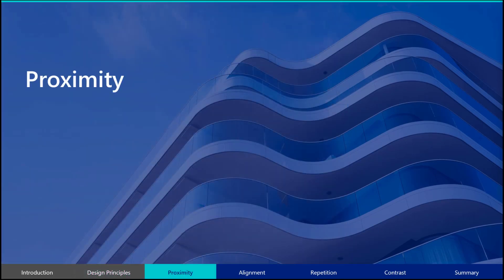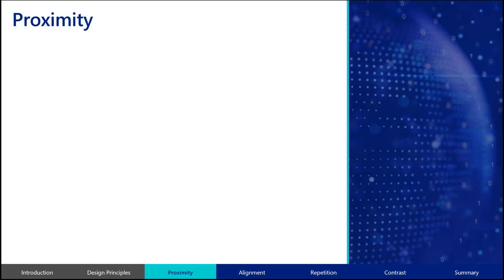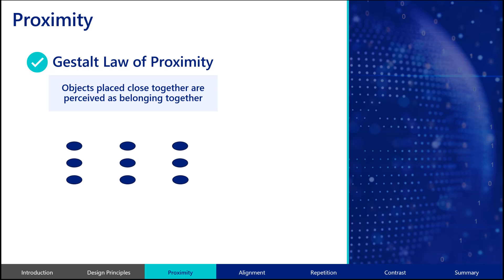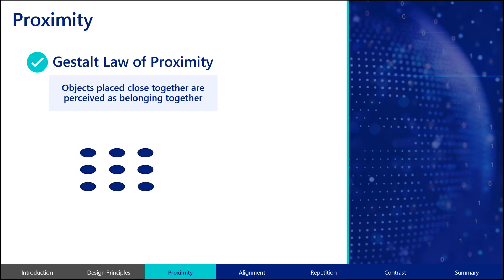One of those principles is proximity. The Gestalt Law of Proximity states that individual objects placed close to each other are perceived as belonging together. The principle of proximity refers to the practice of grouping related items together so they become part of one visual unit, and placing unrelated items further apart. Proximity is one technique to use when you want your audience to quickly understand what information in your visualizations is related.